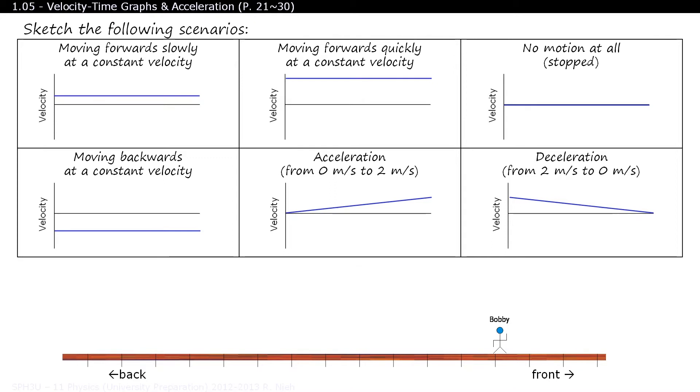There's still another magical property that exists in a velocity-time graph. Let's take a look at the area underneath the graph. Bobby, I need you to start over again. Let's walk forward slowly again. You'll notice a short rectangle forming here as Bobby walks slowly.